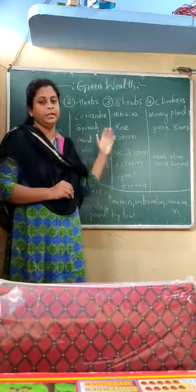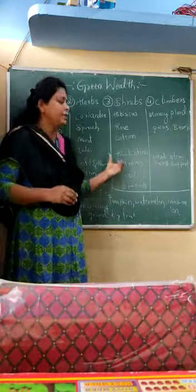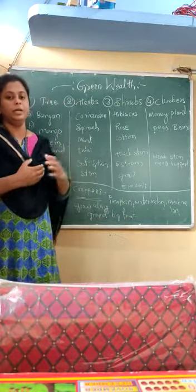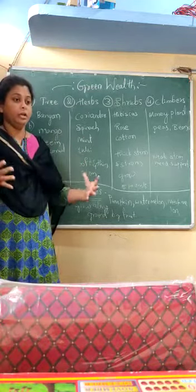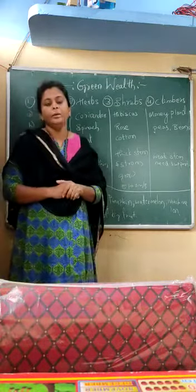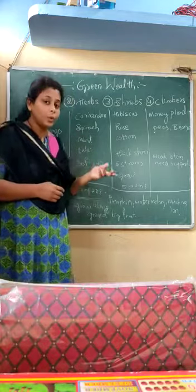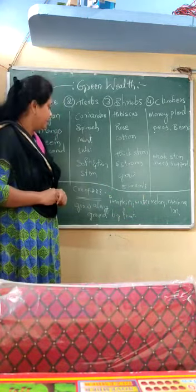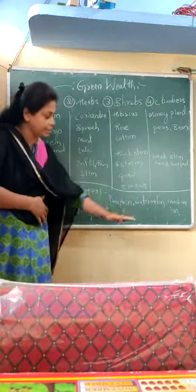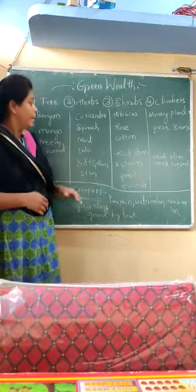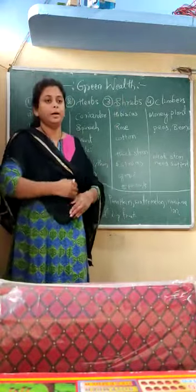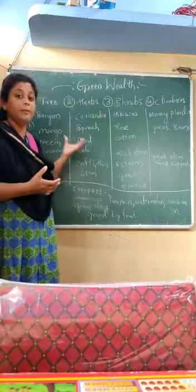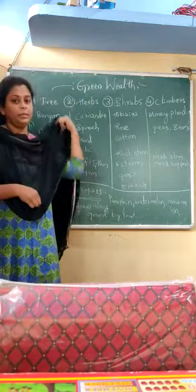The third type is shrubs. Shrubs have a thicker and stronger stem compared to herbs, but they are not as thick or as strong as trees. Compared to herbs — where tulsi, spinach, coriander, and mint only grow to a small height — shrubs can grow five to six meters, which is above my height. So shrubs have a greater growing capacity than herbs.